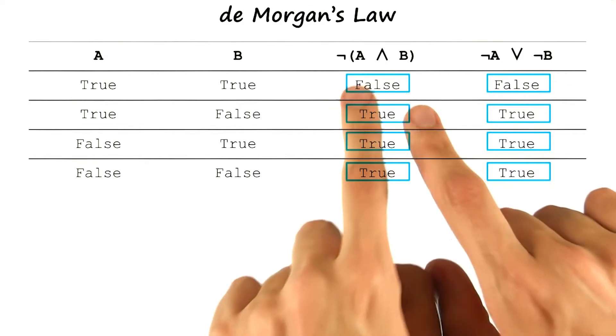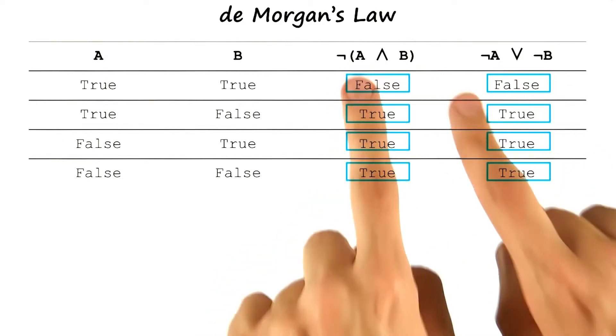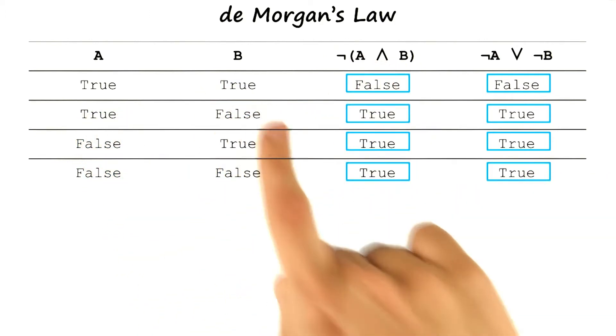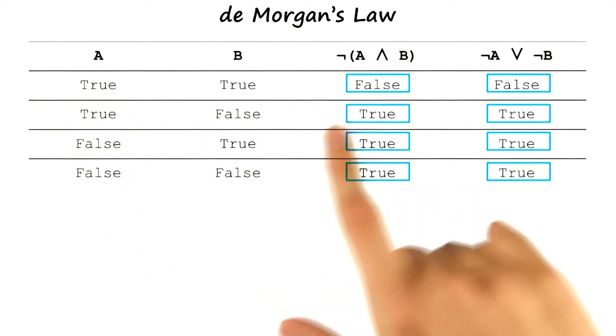What did you get, David? For not A and B, we just take the value of A and B and flip it. A and B is only true when both are true, so when both are true, this becomes false. Any other time, this becomes true.